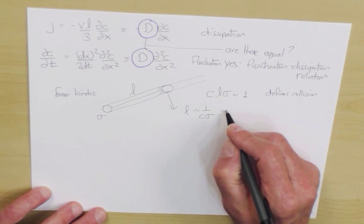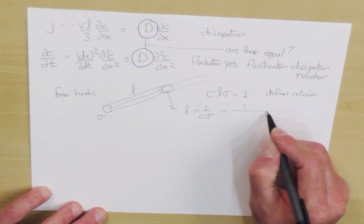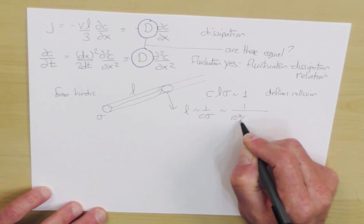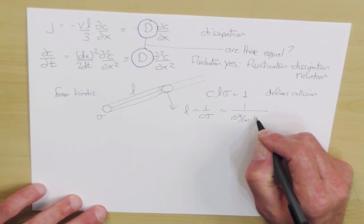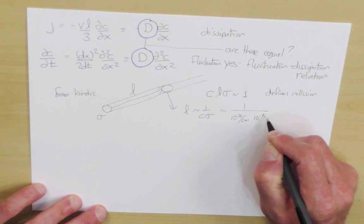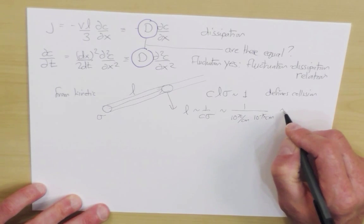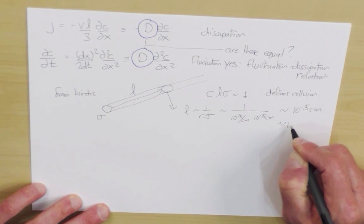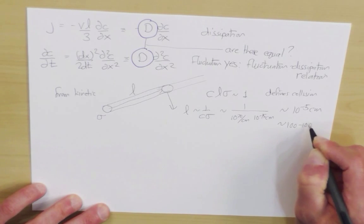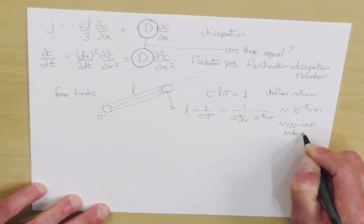And as a matter of interest, just to get a feeling for numbers, the concentration of a gas, say in this room, is 10 to the 20th molecules per cubic centimeter. And the typical diameter of a molecule is of the order of a couple of angstroms, and so the cross-sectional area is a couple of angstroms all squared, which is roughly 10 to the minus 15th centimeters squared. So the mean free path is some number of the order of 10 to the minus 5 centimeters, which is of the order of 100 to 1000 molecular diameters.